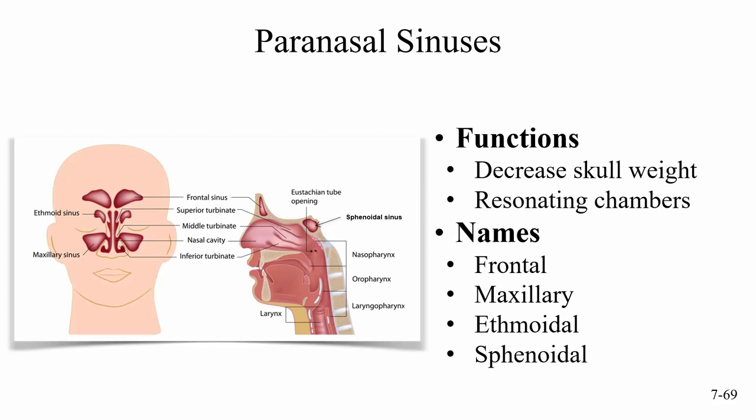When your sinuses are plugged up, you tend to sound a little different. The names of the sinuses are: the frontal sinus, located in the forehead — if you get sinus pain and your forehead hurts, that's the frontal sinus. The next is the maxillary sinus, in the cheek area — it's a pretty large sinus. If your pain is in the cheek area under the eyes, that would be the maxillary sinus. The ethmoid sinuses are located in the corners of the eyes, or just above the corners of the eyes.